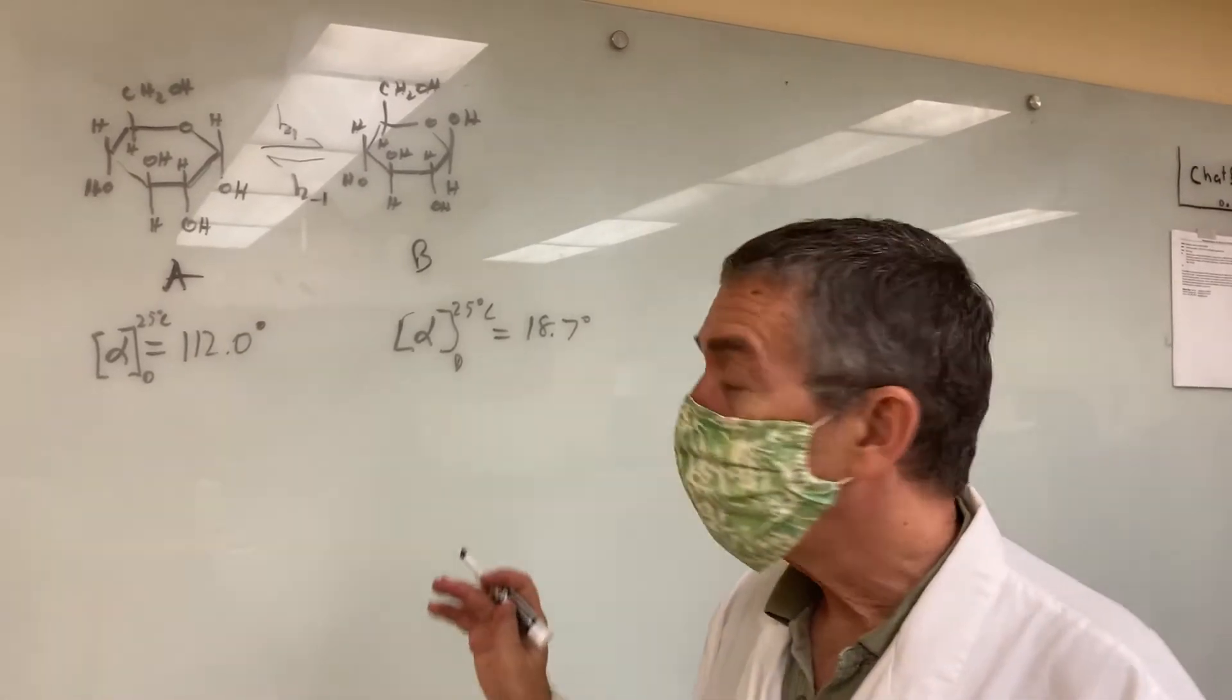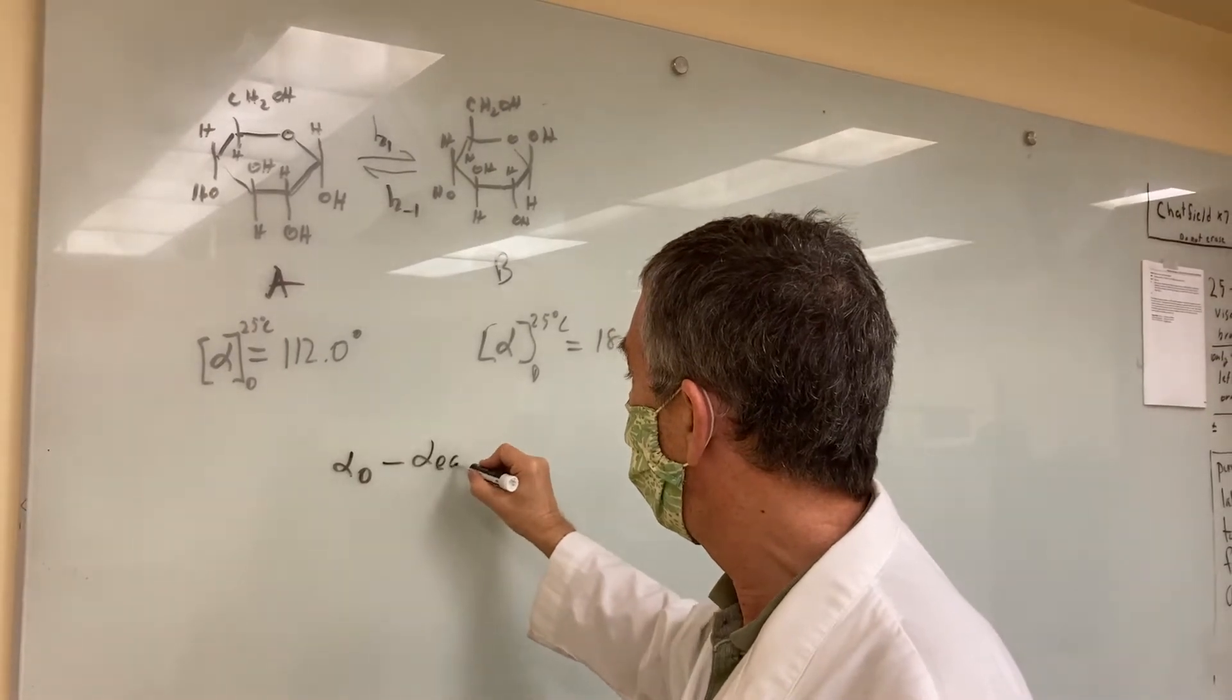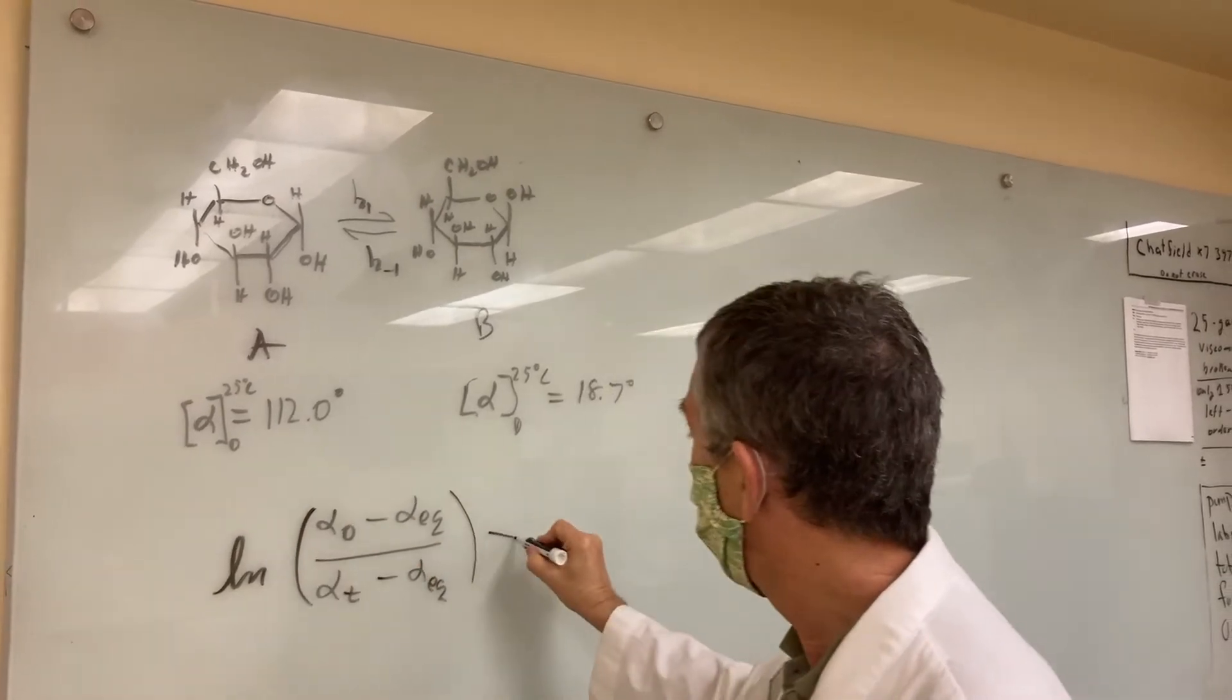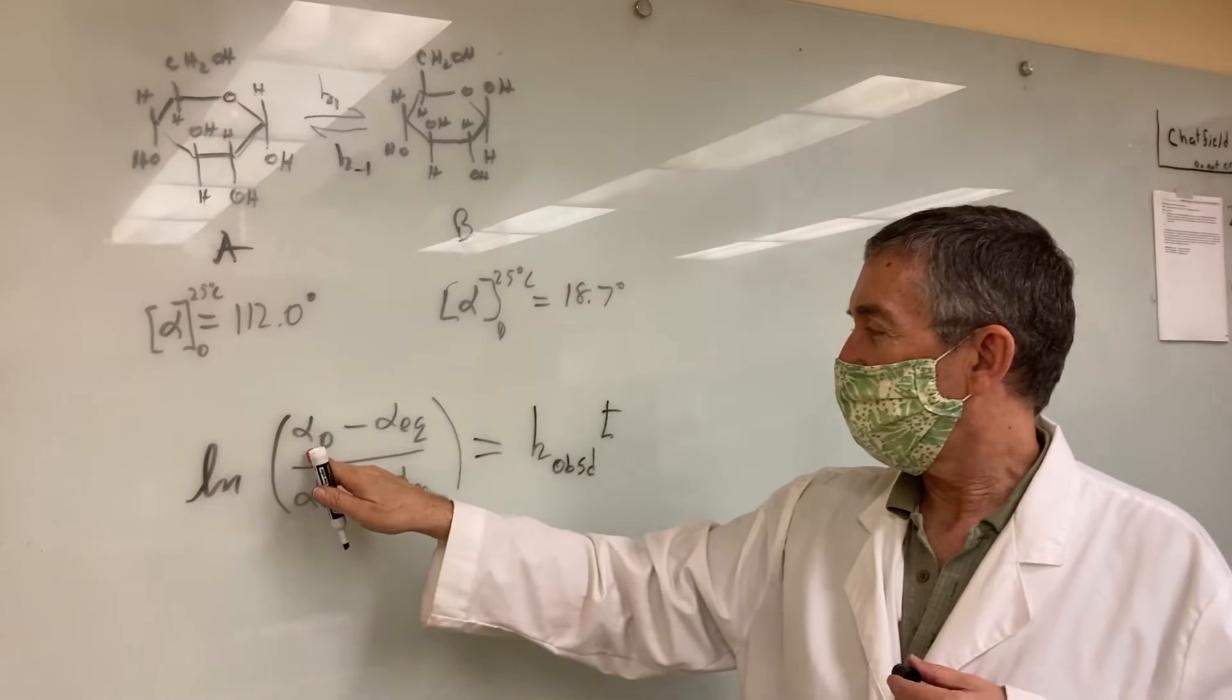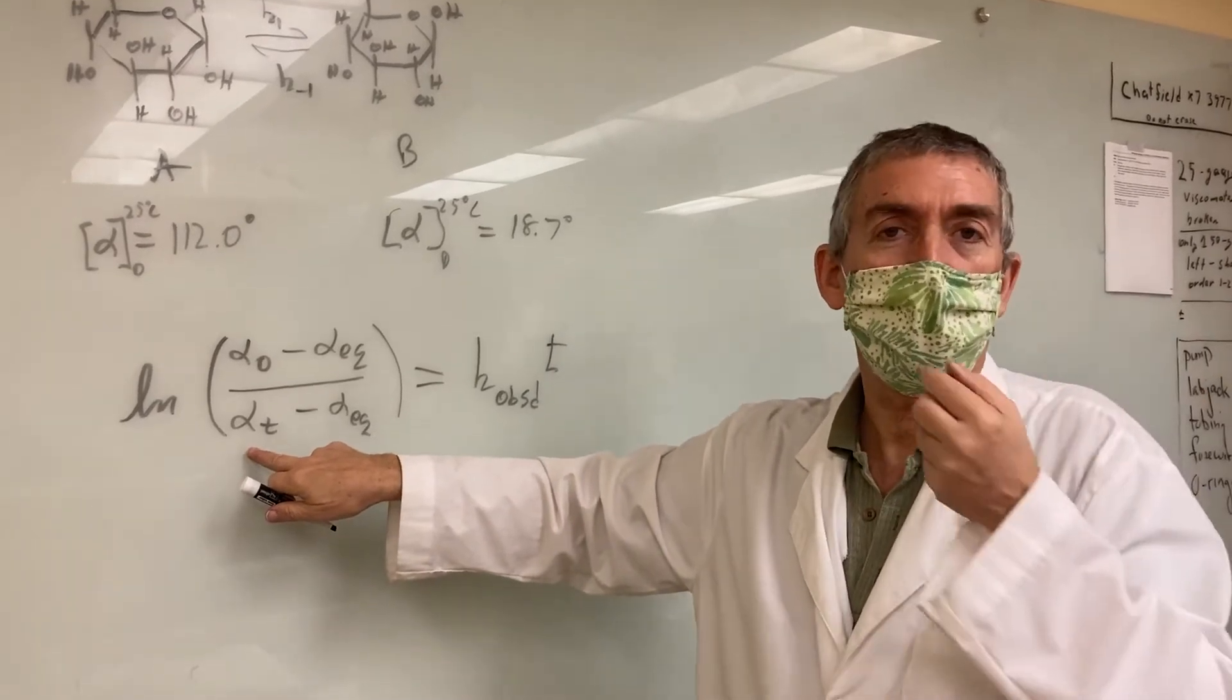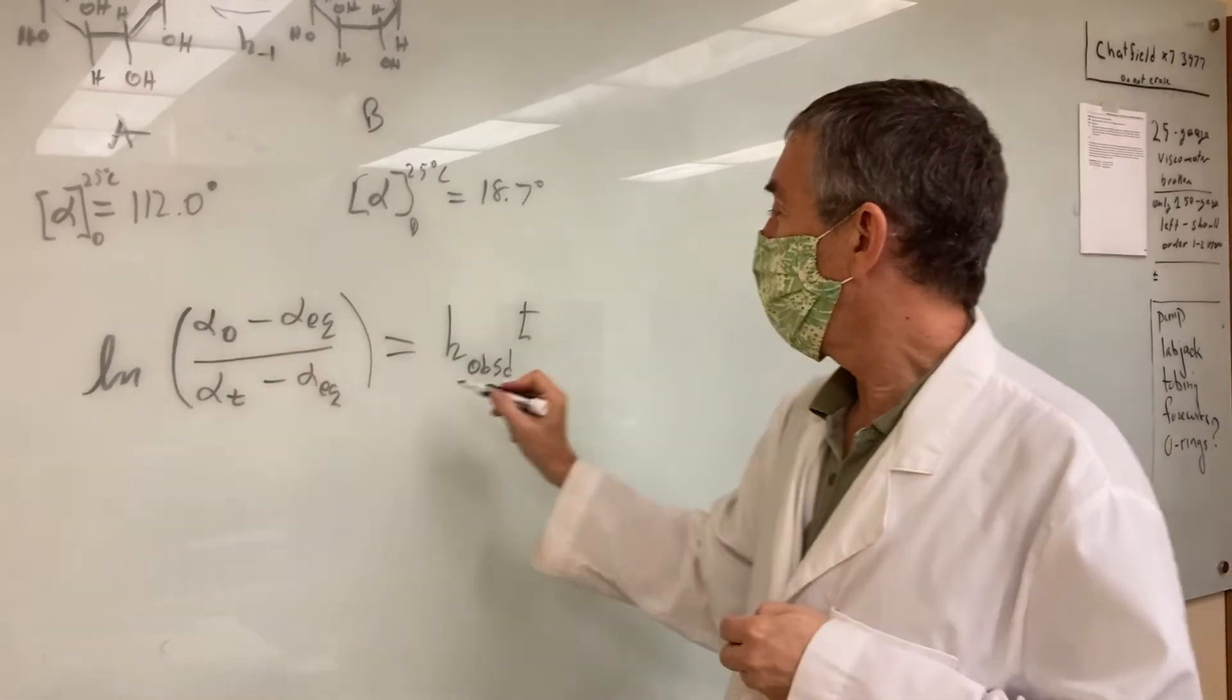Now, without going through the theory, you can measure, what you'll do is you'll measure the actual rotation, we'll call that alpha, at some given point in time. So this alpha naught is the rotation at the time that you start taking measurements. We'll call that time zero. Alpha t is at any particular time. So you'll simply measure alpha at various time points. Alpha equilibrium is the degree of rotation after equilibrium is established. That really won't be for like overnight. It'll take a while. Anyway, the log of that is equal to k observed t.